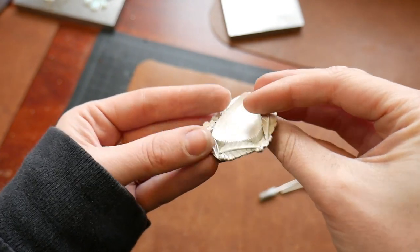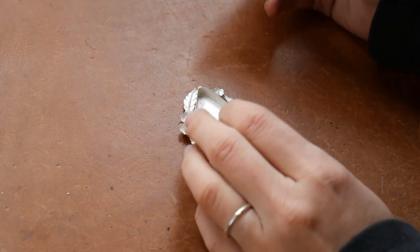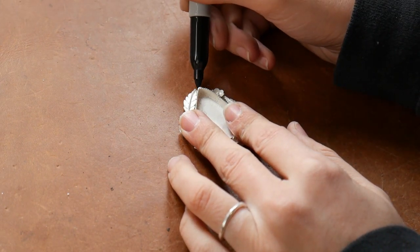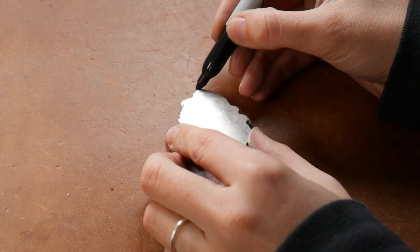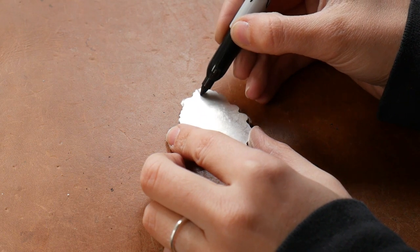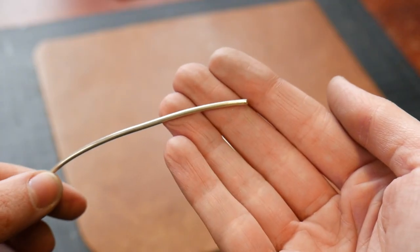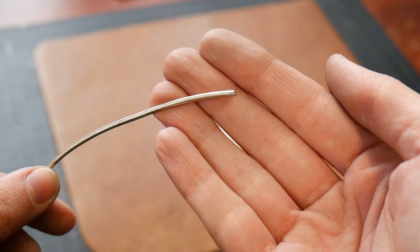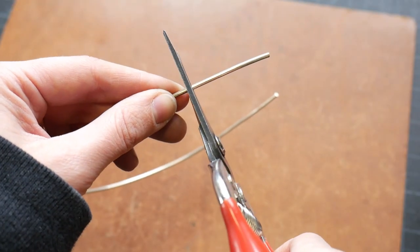And as you can see, the piece is looking pretty good. Now using a Sharpie, I'm just going to mark where I want to place my bail on the back of my piece.